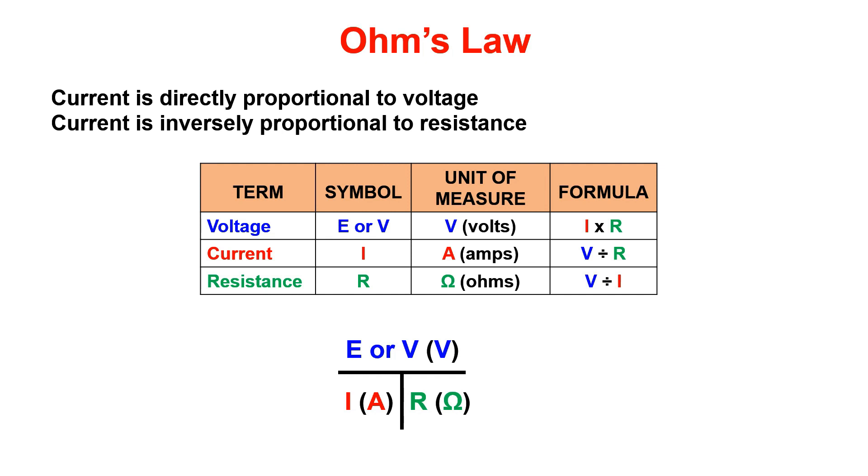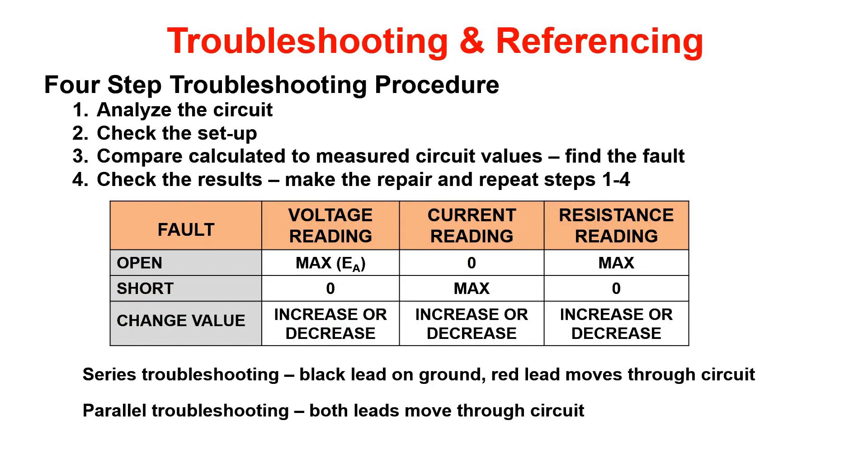We went over a four-step troubleshooting process in class. Refer to your student guide for specifics in each step. First, we analyze the circuit, then check the setup, compare calculated values to measured values, find the fault, then we check our results. Once we make the repair, we will repeat steps one through four and verify that the problem is resolved.